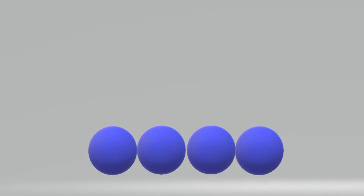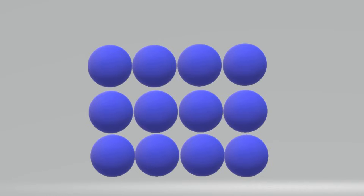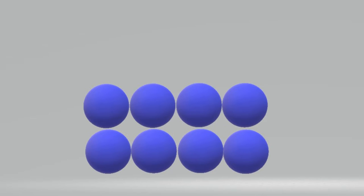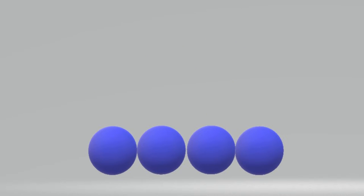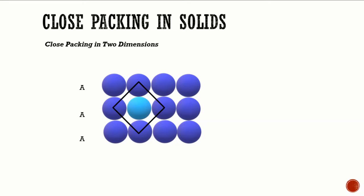The two-dimensional close packed structure can be generated by stacking rows of close packed spheres, which can be done in two ways. In the first way, the second row is placed in contact with the first such that the spheres of the second row are exactly above those of the first row, aligned both horizontally and vertically. If we call this an A-type row, the second row is also A-type. Each sphere is in contact with four neighbors, so the two-dimensional coordination number is four. Since joining the four immediate neighboring sphere centers forms a square, this is called square close packing in two dimensions.